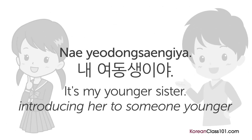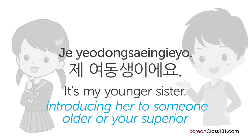Let's say you want to introduce your younger sister to your friend. If you're introducing her to someone younger than you, you'd say: 내 여동생이야. — It's my younger sister. Or, if you're introducing her to someone older or your superior, you should use the humble form and say: 제 여동생이에요.